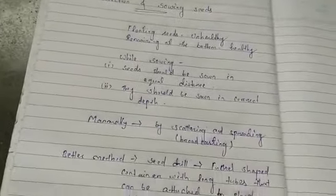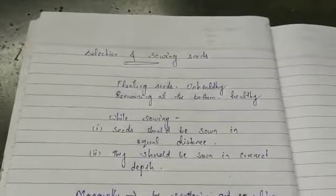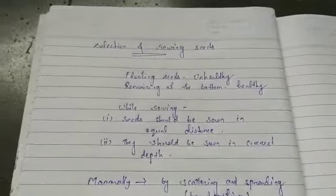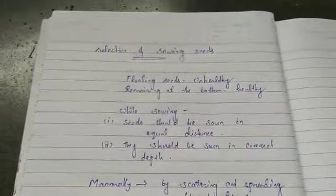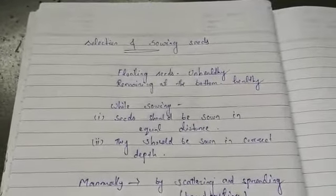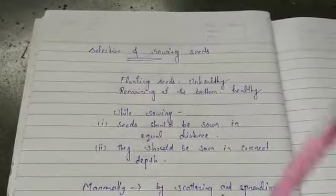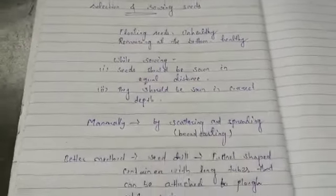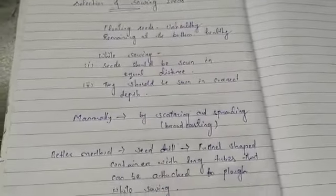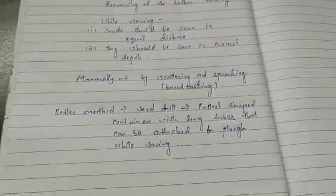After selecting and sowing the seeds, this is the most important part of agricultural practices. If we select healthy seeds and sow them properly, we will get a good product. After this step, we will move on to providing nutrients to the crop.